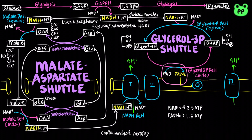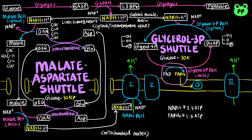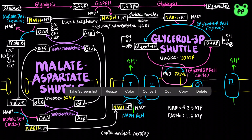Therefore, cytosolic NADH transported by the malate-aspartate shuttle results in about 32 ATP per glucose molecule, whereas the glycerol-3-phosphate shuttle only results in 30 ATP. The calculation of ATP yield per glucose molecule has been covered in a previous video titled oxidative phosphorylation.